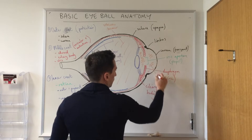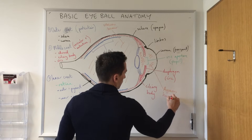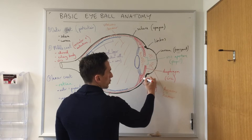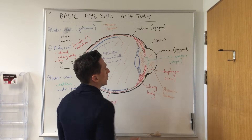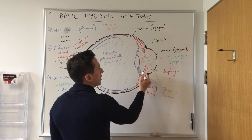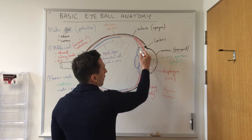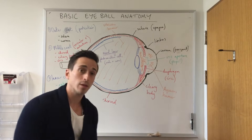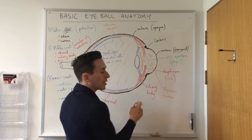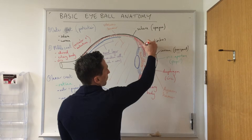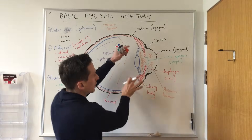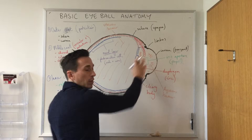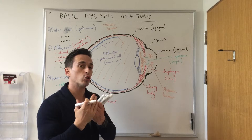Anteriorly, there is more humor called the aqueous humor. The aqueous humor is produced by the epithelial cells at the anterior portion of the ciliary body. These cells produce the aqueous humor, which moves through the posterior chamber and then into the anterior chamber. This humor needs to be drained daily via a lymphatic vessel located in this region. If it isn't drained, aqueous humor accumulates in the anterior and posterior chambers, leading to increased intraocular pressure, which can result in glaucoma.